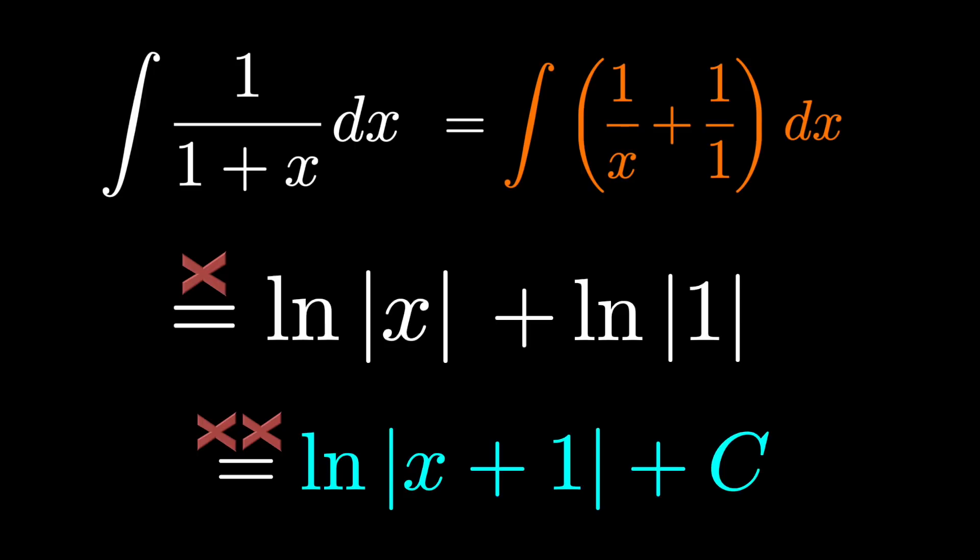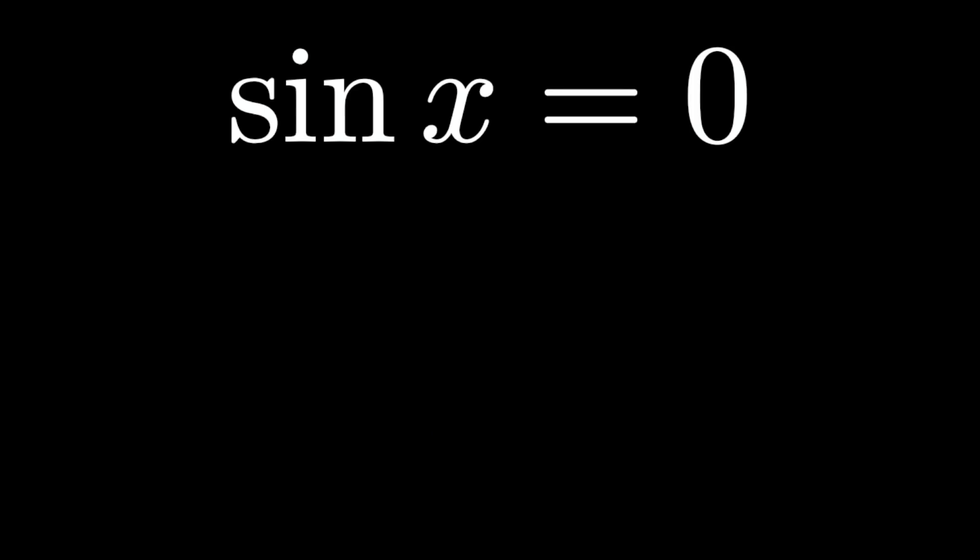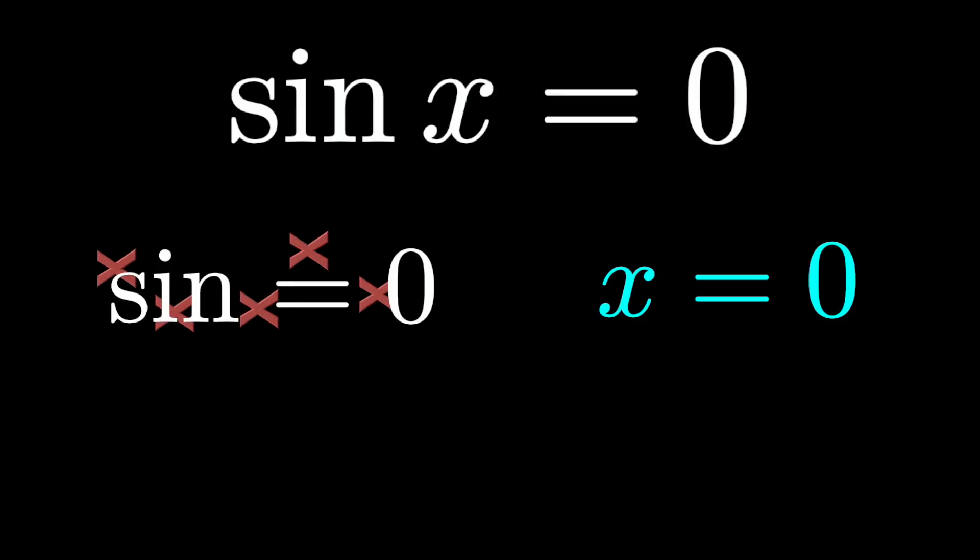Take sin x equals 0. When you have a product of two terms equaling 0, either the first is 0 or the second is 0. So x must be 0. Since a function can't just be equal to 0, sin equals 0 doesn't make sense. So x is 0. Which would happen to be correct on a restricted interval.